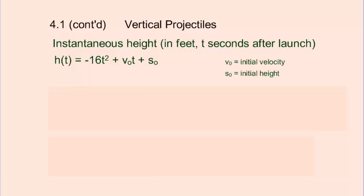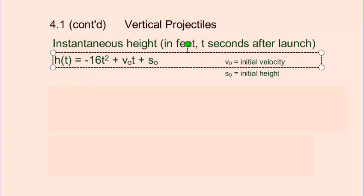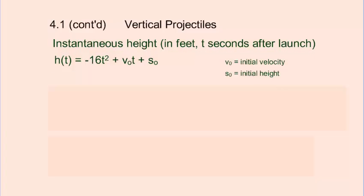You can always calculate the height in feet after t seconds from its launch by using the equation h of t equals negative 16t squared plus, they call this v naught. v sub zero is v naught t plus s naught, which sounds like you need a Kleenex. v naught is simply the velocity at launch.